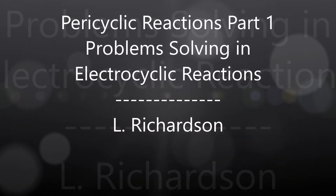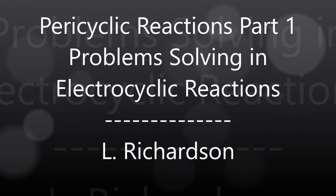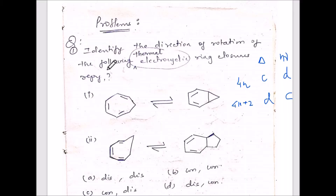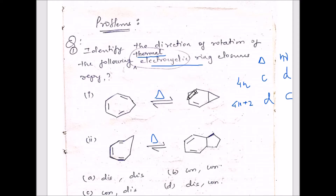In this video we will discuss some problems related to electrocyclic reactions. The first problem: identify the direction of rotation of the following thermal electrocyclic ring closures. They have given two reactions under thermal conditions, and you have to find whether it is con rotation or dis rotation. Before doing anything, you should first ask whether all the pi electrons in the reactant are involved in cyclization.